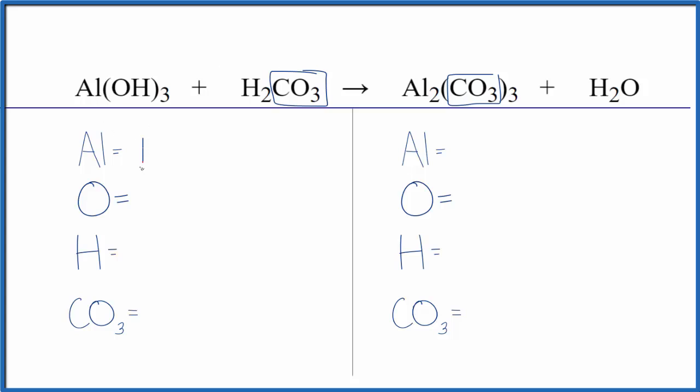So we have one aluminum. We have three times one. That's three oxygens. And we're not going to count these oxygens here because they're with the carbonate. And we're counting the carbonate as just one thing.